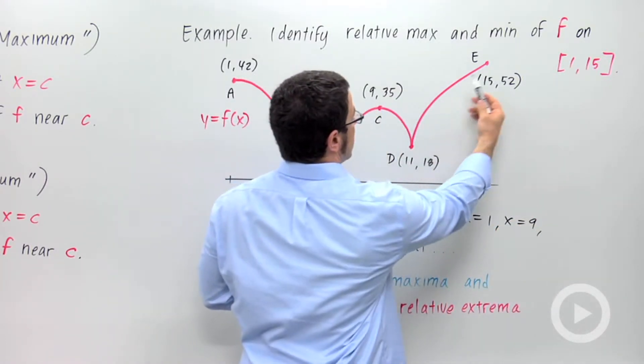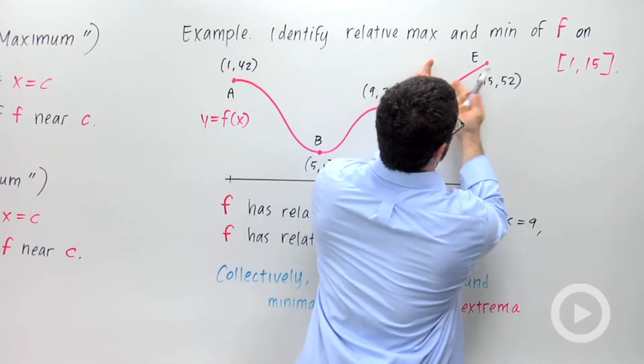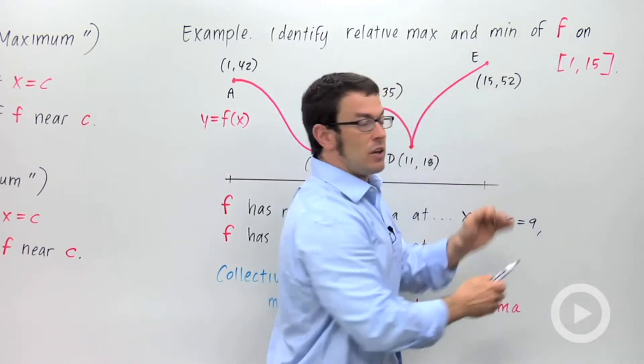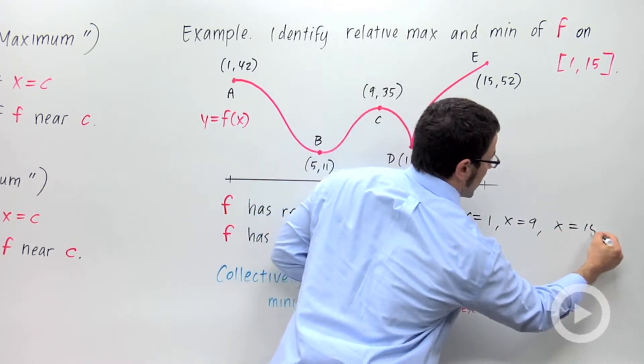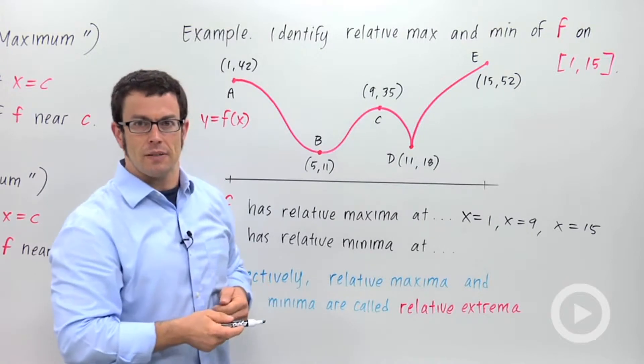And finally, at this end point, the graph seems to hit another maximum. If you look at it, 52 is the value of the function here. And that's the highest value in some interval around that point. And so at x equals 15, we've got a relative maximum. So we have 1, 9, and 15 are the locations of the relative maxima.